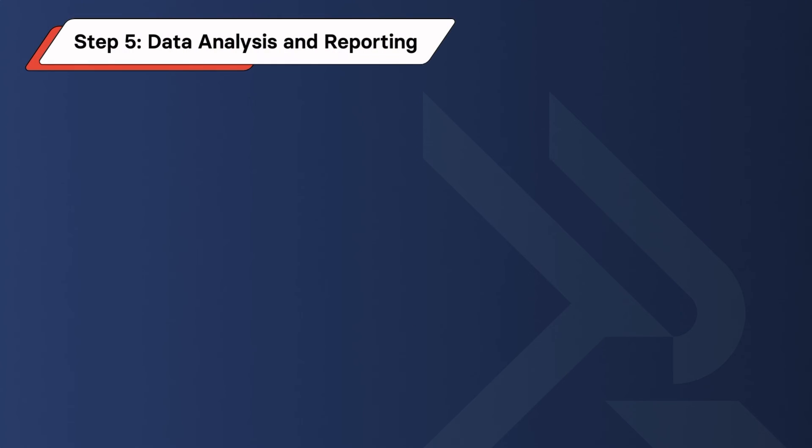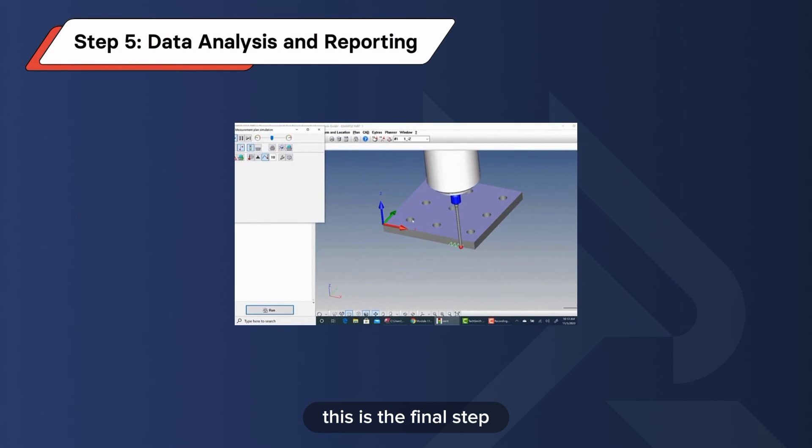Step 5 is data analysis and reporting. This is the final step, where the measured data is analyzed using specialized software. Deviations from the part's CAD model are identified and a comprehensive report is generated. This provides insights into the part's quality.